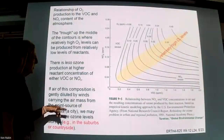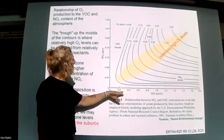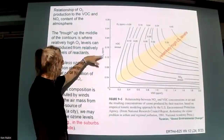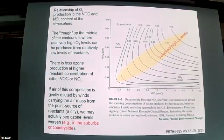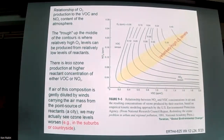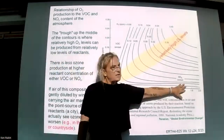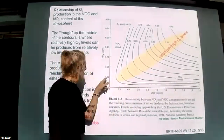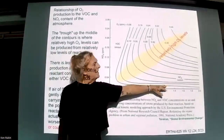This contour plot shows VOCs versus nitrogen oxides and how much ozone is produced at different mixtures. If we have a lot of VOCs but not very much nitrogen oxide, we don't get much ozone.